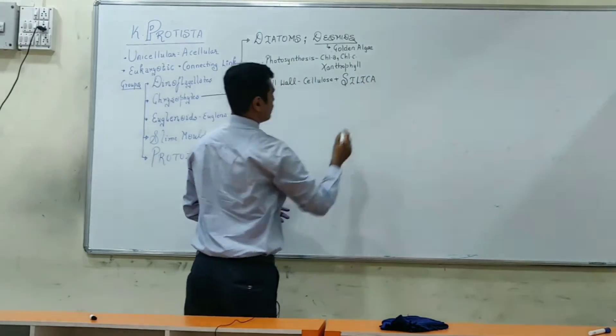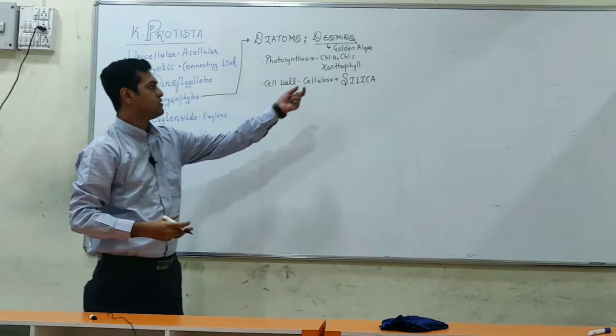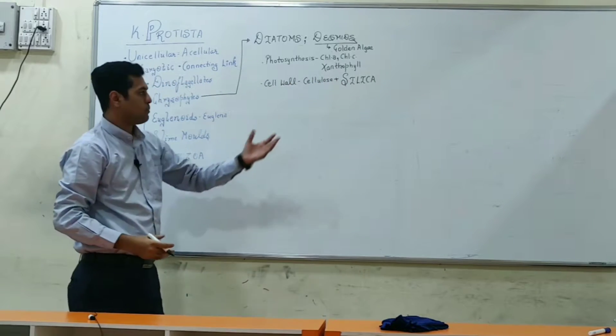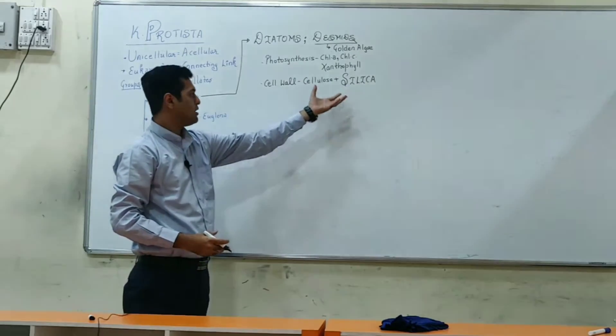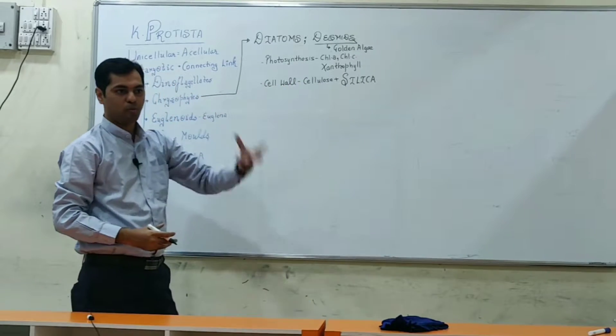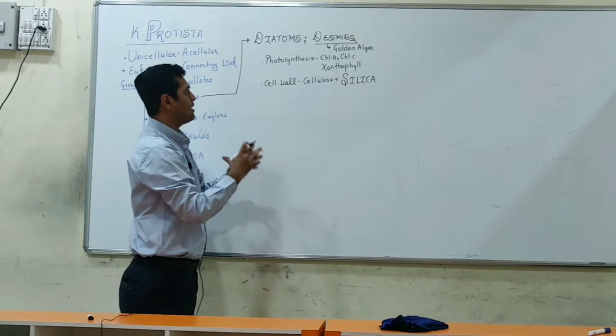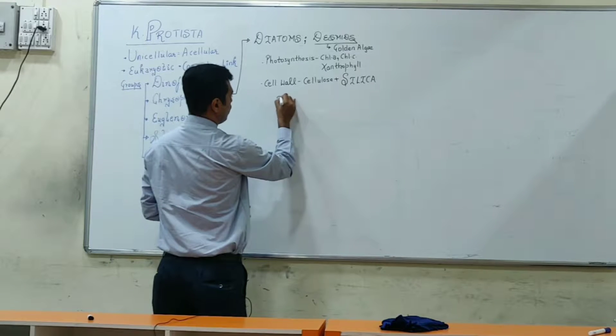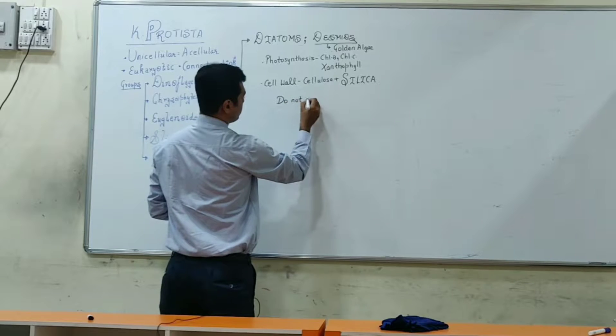Diatoms have a siliceous plus cellulosic cell wall. Because of the presence of silica, this cell wall has such good properties that when diatoms die, they usually do not undergo decomposition.